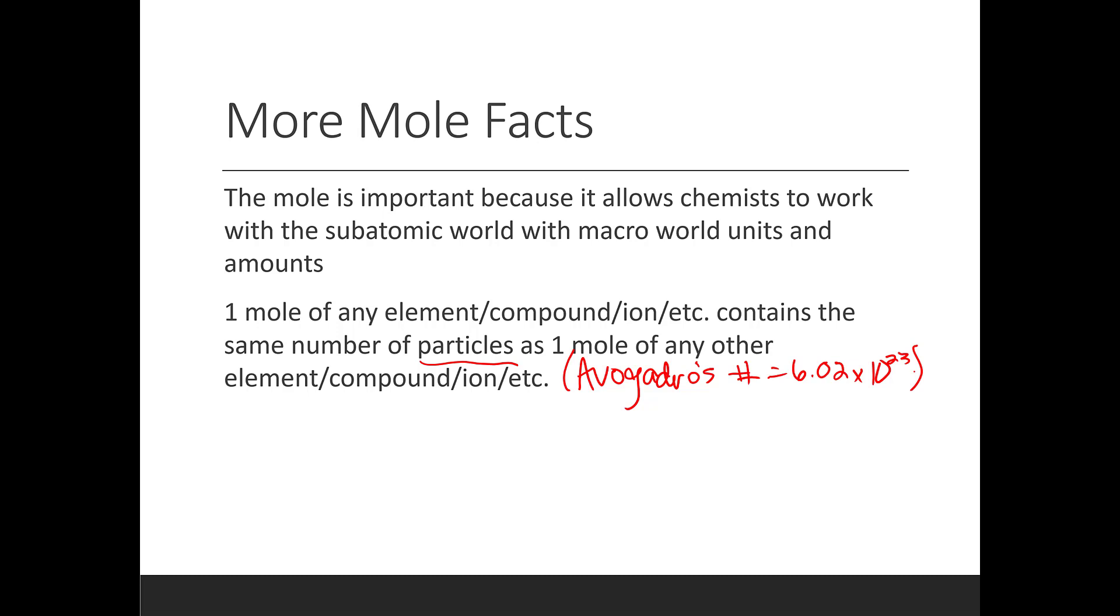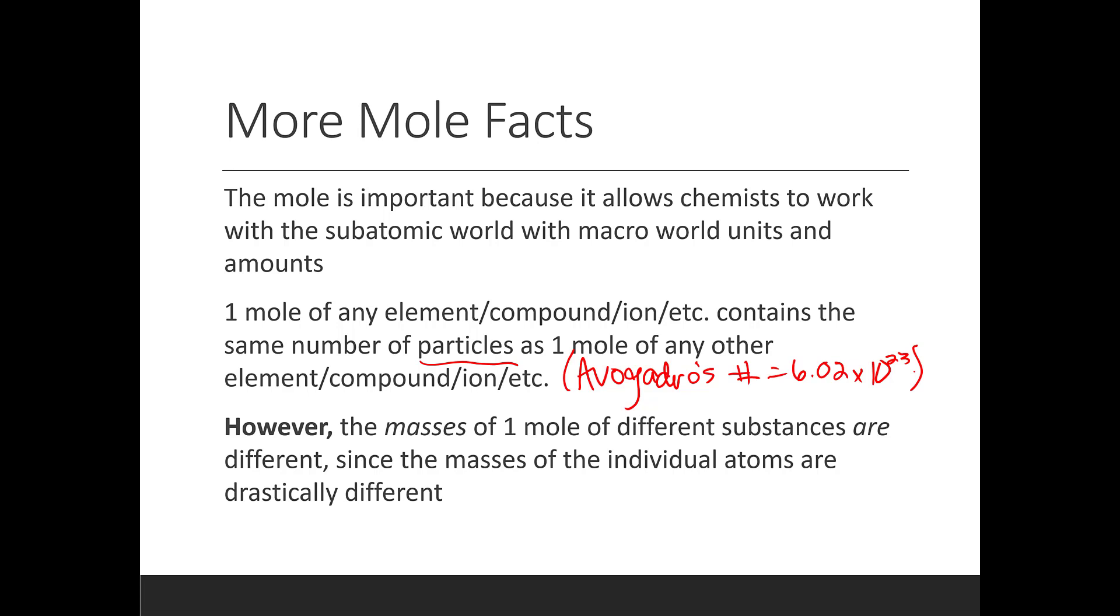But atoms are all different sizes. We learned in the last unit about atomic radius. All of these atoms have different sizes. So even though one mole of something has the same number of particles as one mole as another item, the masses of those substances are different because the masses of the individual atoms are different. So in this video, we are going to learn about something called molar mass, i.e. the mass of a mole of a bunch of different substances.